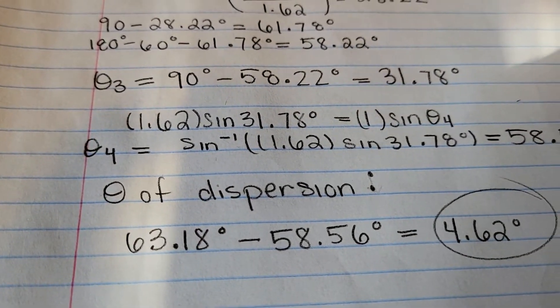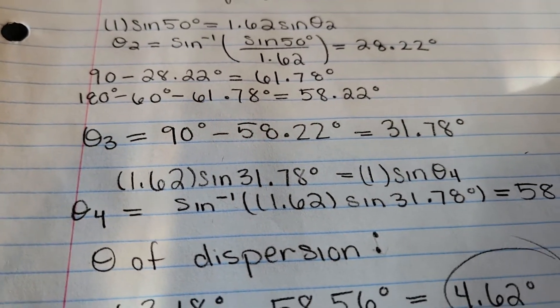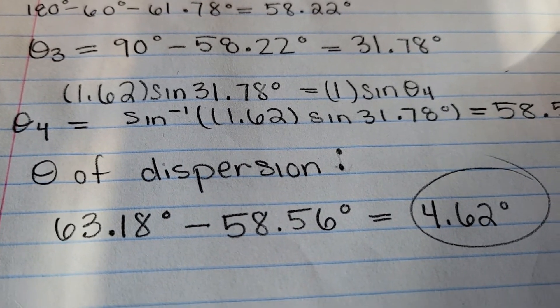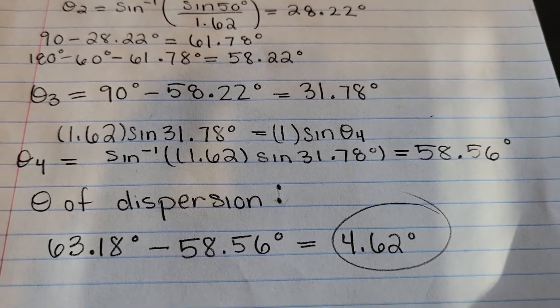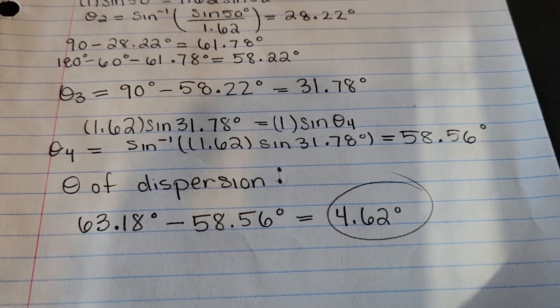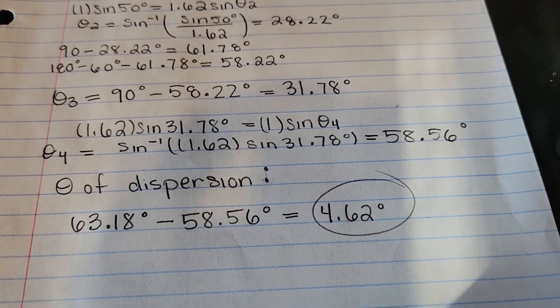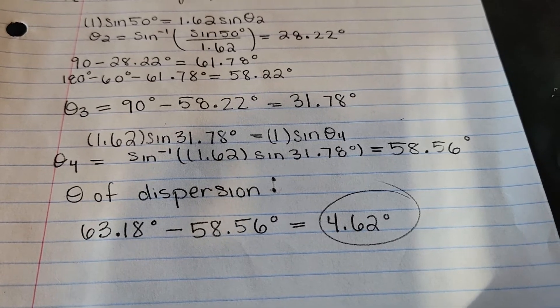So now we can use Snell's Law again to find the final angle that's coming out of the prism. So I just took Snell's Law, that's what I did, and then I got 58.56 degrees.